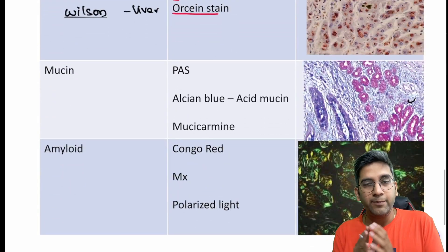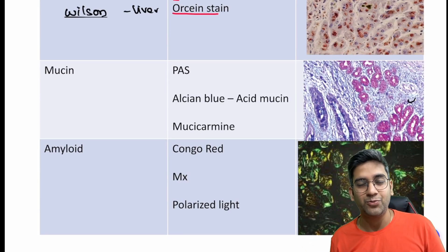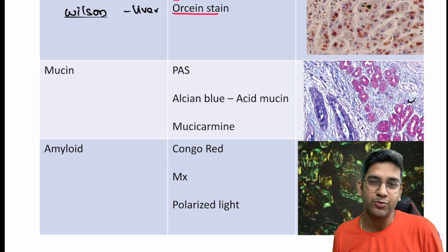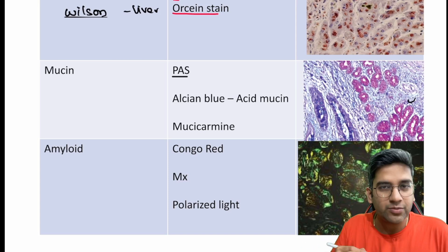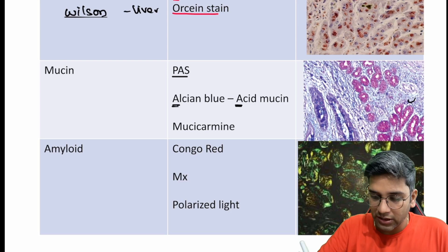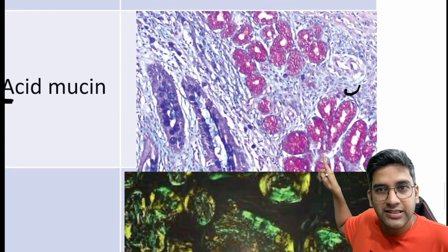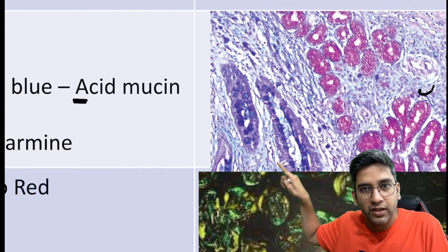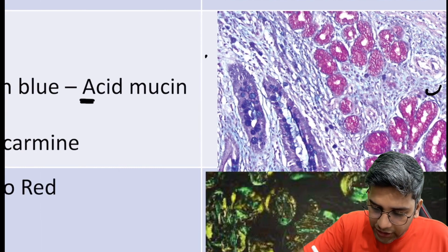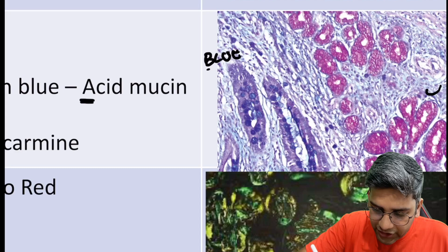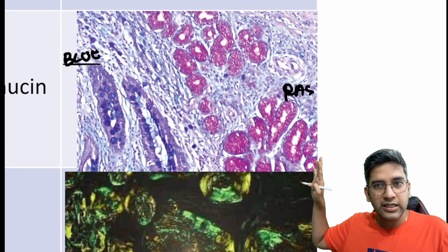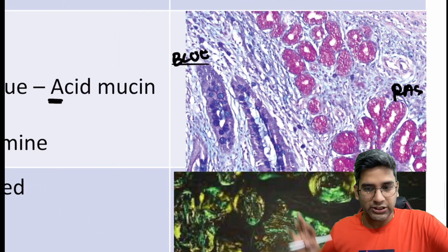Now, mucin. Mucin is unique — I have different types: neutral mucin, acidic mucin, and basic mucin. PAS stains most mucin. Alcian blue is more specific for acidic mucin. As you can see in this image, the magenta color is PAS; the blue color here is Alcian blue. So, PAS will be magenta in color and Alcian blue will be bluish in color. Alcian blue staining for acid mucin came once in an AIIMS/INICET exam — please remember them.